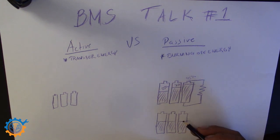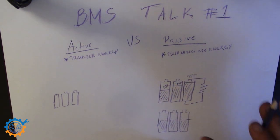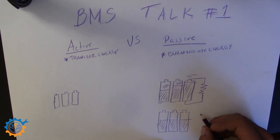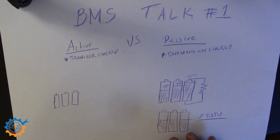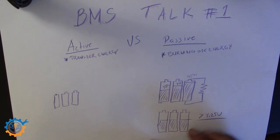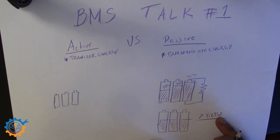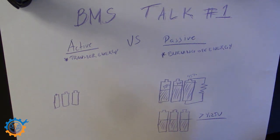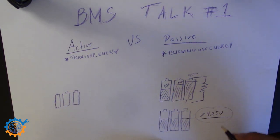In that case you generally use a top balancing method where you balance everything to the top. The Chinese balancers you find generally start to balance or bleed off when you reach above 4.25 volts — that's the most common behavior. So if you have a Chinese balancer and you set your top voltage to 4 volts, they will never balance unless one of the cells goes above 4.25 volts, which generally means some other cells are likely below 3.9 volts depending on the number of cells.